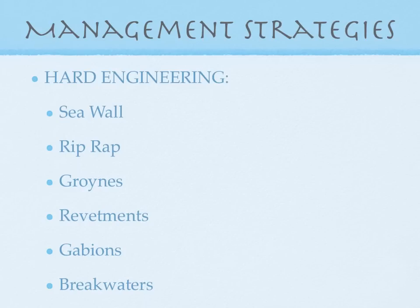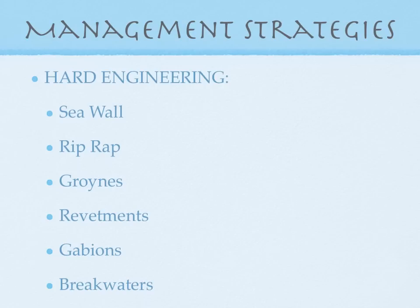Revetments are slanted structures made of concrete, wood, or rocks built at the foot of cliffs. They absorb wave energy and reduce erosion — very similar to sea walls. They're expensive to build and create strong backwash that erodes under the barrier, so they need a lot of maintenance. Gabions are rock-filled cages built at the foot of cliffs; they absorb wave energy and reduce erosion, though they look ugly. Finally, breakwaters are concrete blocks or boulders deposited on the seabed just off the coast. They force waves to break offshore so their erosive power is reduced before they reach the shore. These are very expensive and can be damaged by storms, needing replacement if strong waves damage them.